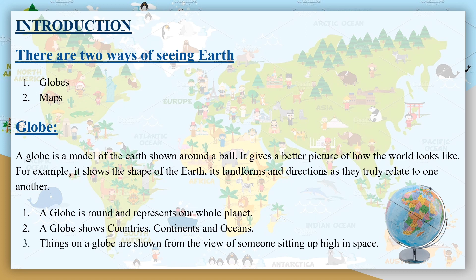First we will talk about the globes. A globe is a model of the earth shown around a ball. It gives a better picture of how the world looks like and it shows the shape of the earth.